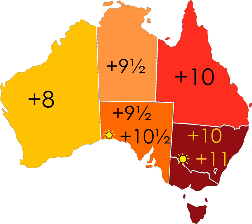The town of Broken Hill is in far western New South Wales. Unlike the rest of New South Wales, Broken Hill observes Australian Central Standard Time, a time zone it shares with South Australia and the Northern Territory. When Standard Time was adopted, Broken Hill was linked by rail to Adelaide, not Sydney.